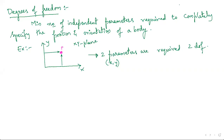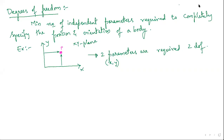Degrees of freedom is the minimum number of independent parameters required to completely specify the position and orientation of a body. As an example, a point on the XY plane has only two parameters required: the x parameter and the y parameter. To completely specify where the point is, x and y are variable parameters, so you can call it two degrees of freedom.